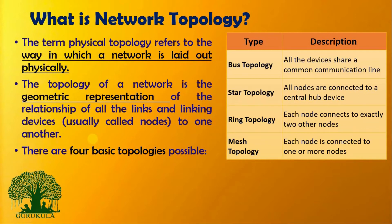There are four basic topologies in computer networks. The first one is bus topology. In bus topology, all the devices share a common communication line, as depicted in the figure.